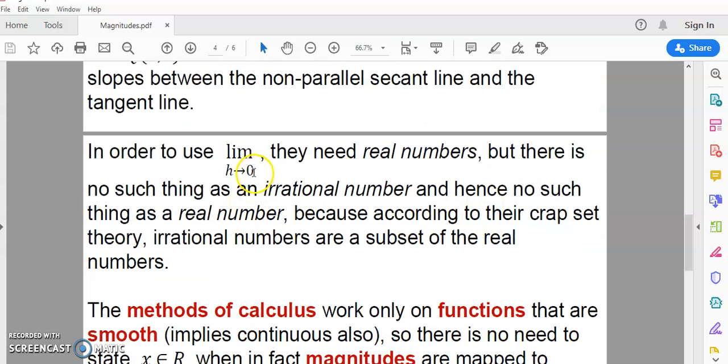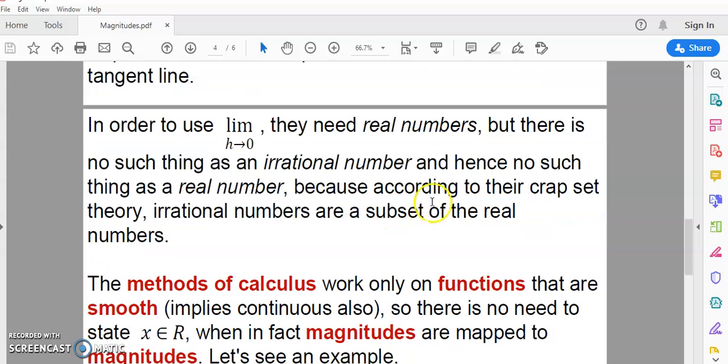So, in order to use limit as h approaches 0, they need real numbers. But there is no such thing as a real number. Because, you know, according to their set theory, irrational numbers are a subset of the real numbers. So, what if you have that magnitude pi? Remember, pi is not a number. Pi is just a symbol for the magnitude known as pi. And how is pi realized? It's realized when you attempt to measure the periphery of a circle using its diameter as the unit. You can't realize pi in any other way.